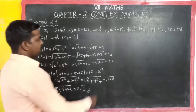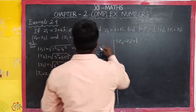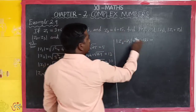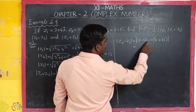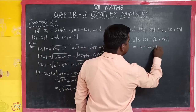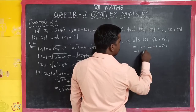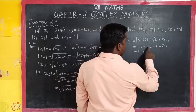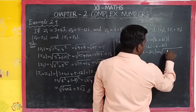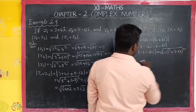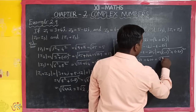Next, modulus of z2 minus z3. So z2 minus z3 is 5 minus 12i minus the z3 value in brackets, 6 plus 8i. Subtracting: real parts 5 minus 6 equals minus 1, imaginary parts minus 12 minus 8 equals minus 20. So the modulus is square root of minus 1 whole squared plus minus 20 whole squared — square root of 1 plus 400 — equals square root of 401.